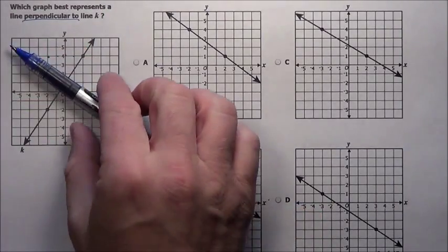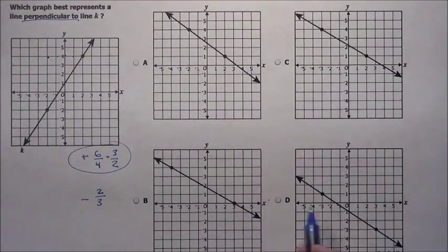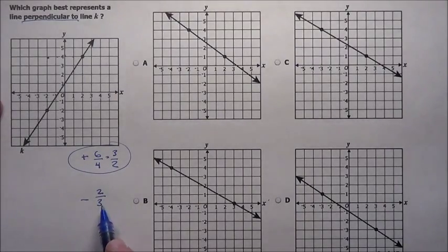Since this is going positive, I have to hit it going the opposite direction. So all of these are negative, so we know that. So I am just looking for somebody that has a slope of 2 thirds.